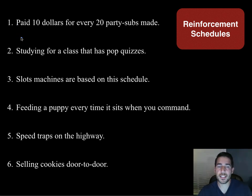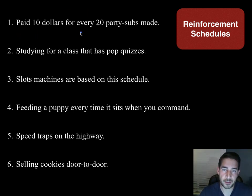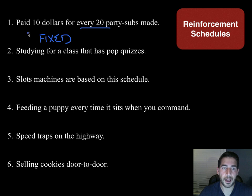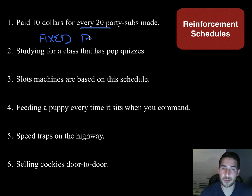You're paid $10 for every 20 party subs made. Do you know exactly when you're going to get rewarded? Yes — every 20. So that's fixed. Are you doing something? Yeah, you have to make the party subs. So it's fixed ratio.